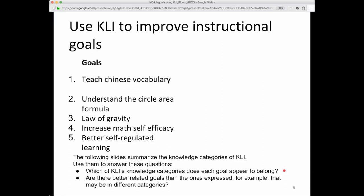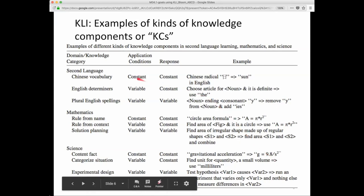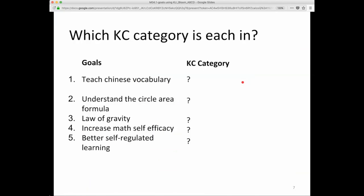Think about how you can answer those questions. Which of CLI's knowledge categories does each goal appear to belong? Teach Chinese vocabulary — does it belong as a kind of fact, a constant-constant relationship? Look at that — Chinese vocabulary right there. That's straightforward. So that's a fact.